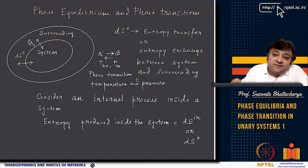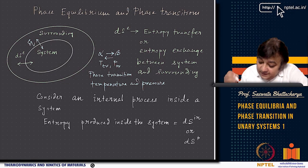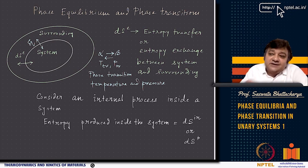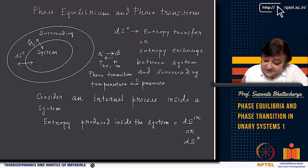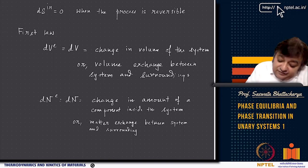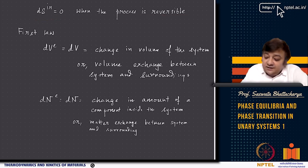There is entropy coming from exchange between system and surroundings — like exchange of thermal matter due to heat transfer — and this can happen whether the process is reversible or irreversible. However, when the process is irreversible, there will also be a non-zero entropy produced. DS_IR equals 0 when the process is reversible.